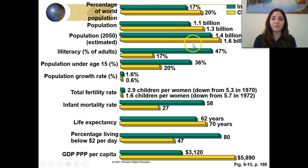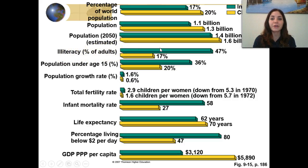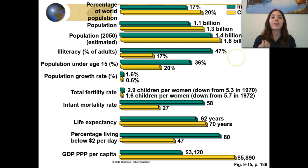In 2050, the projected growths show India having 1.4 billion and China having 1.6 billion. One important thing to note is the rate of adult illiteracy. In India, almost 50% of all people cannot read or write, whereas China only has about a 17% illiteracy rate.